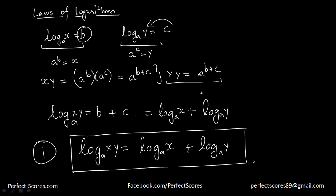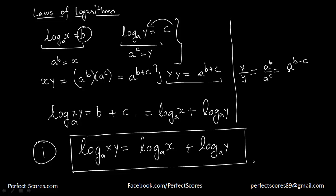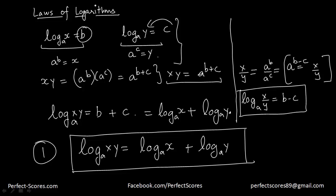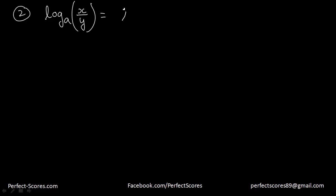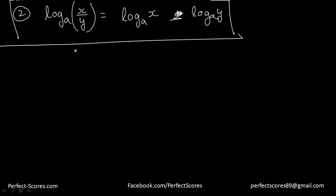Let's go ahead and use the same property for a different set of logarithms. Using the same definitions, if I want to do x over y, I will actually get a to the power b divided by a to the power c, which is equal to a to the power b minus c. That means if I take the logarithm, I'll have log of x over y to the base a is equal to b minus c. So the second law of logarithms states that log of x over y to the base a is equal to log of x to the base a minus log of y to the base a.